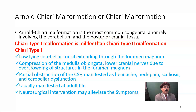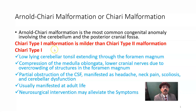We have two types of Chiari malformation. Chiari type 1 malformation is the milder form — it is milder than Chiari type 2 malformation.